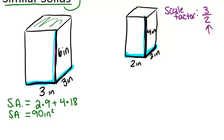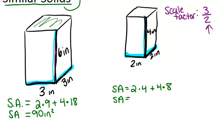Now for the smaller prism, it's the same idea. There are two square bases which each have an area of 4, so we want 2 times 4 for those two bases. And going around, we have four rectangular faces that each have an area of 8. So we add 4 times 8, and we get a surface area of 40 inches squared.